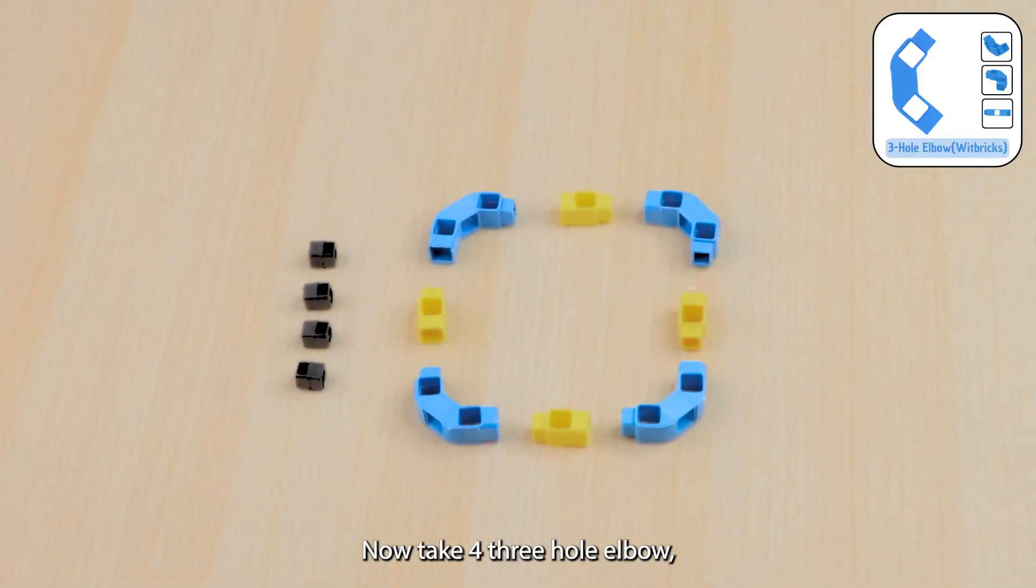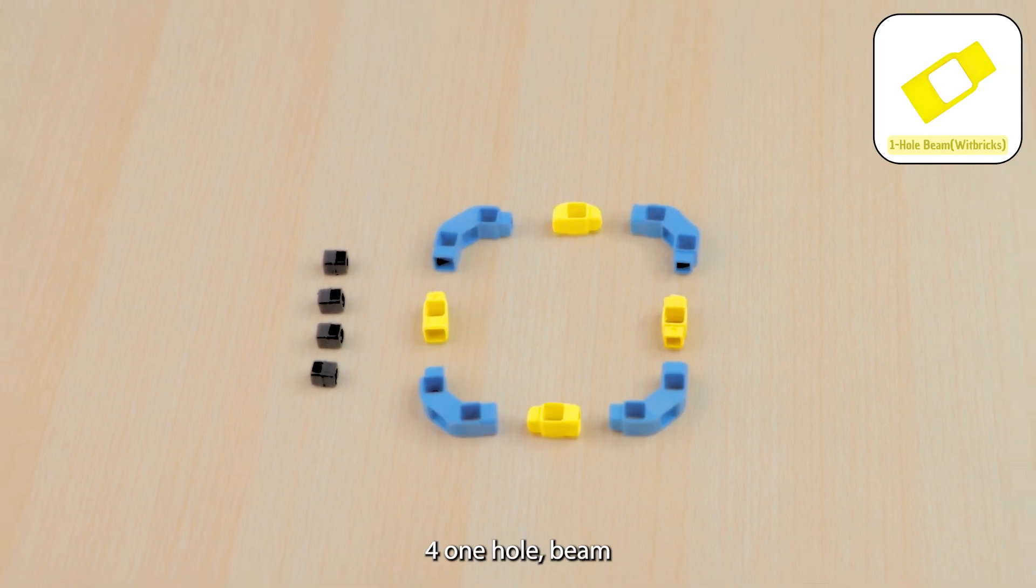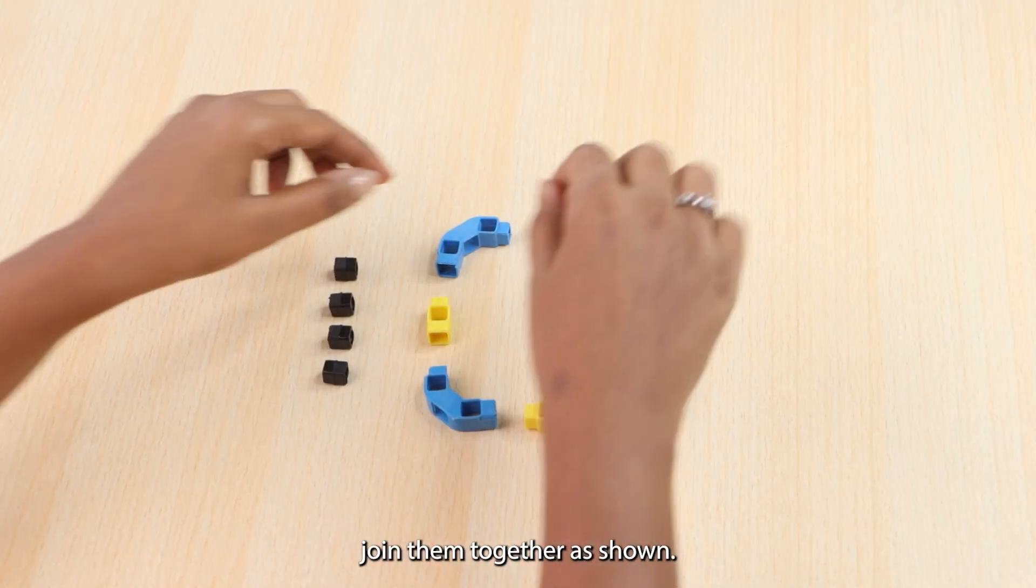Now take 4 three-hole elbows, 4 one-hole beams, 4mm couplers and join them together as shown. Then take 4 three-hole beams and join them as shown.